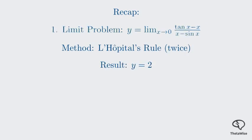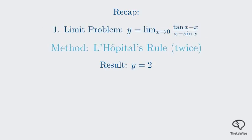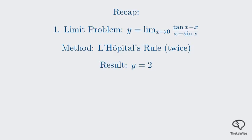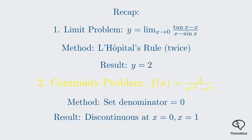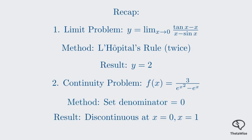Let's quickly recap what we've accomplished in this tutorial. We successfully solved a complex limit problem. We started with a 0 over 0 indeterminate form, and by carefully applying L'Hôpital's rule twice, along with some algebraic simplification, we found the limit to be 2. We demonstrated a powerful technique for handling these types of limits. Next, we tackled a continuity problem. We identified that the function f(x) equals 3 divided by e to the x squared minus e to the x was discontinuous whenever its denominator was 0. By solving the resulting exponential equation, we found these critical points to be x equals 0 and x equals 1.